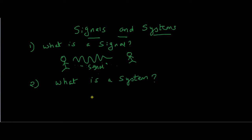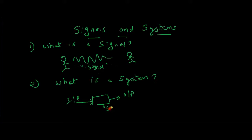And coming to the system — a system is any physical entity which takes an input, processes the input, and then gives a certain output. There are many examples for a system. Your mobile phone is a system, your television, TV, mobile, etc. These all come under system. They all take certain input and then send a specific output.